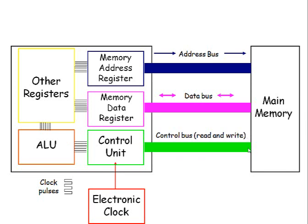The control unit has got several different lines of control. Two which you need to know about are the read and write lines, which give the instruction to carry out either a read operation or a write operation. There are some other lines — the non-maskable interrupt and interrupt and so on — and we'll talk about them when we go over the unit.